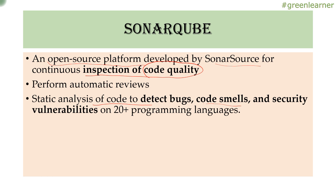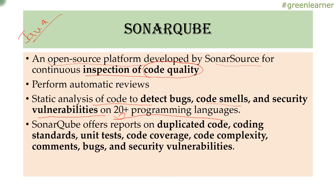SonarQube has been in the market for a long time and has evolved to be very intelligent. It can detect security vulnerabilities, and it doesn't just support Java — it supports 20+ programming languages. SonarQube offers reports on duplicate code: if you've written the same piece of code in different locations in your project, it can detect that and suggest you refactor it into a method. It can also give you a report about coding standards and unit tests — how many unit tests you've written.